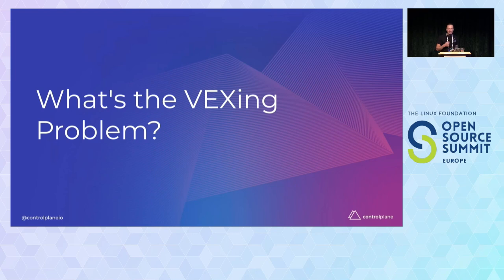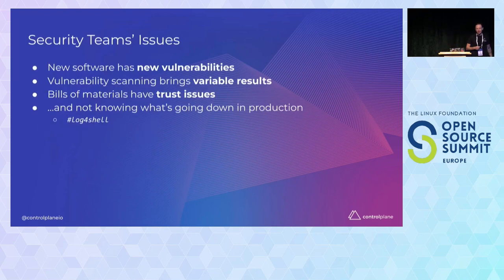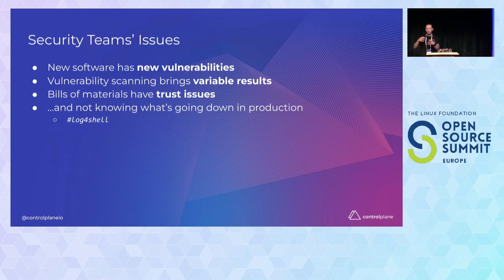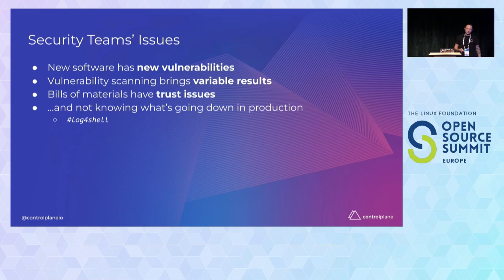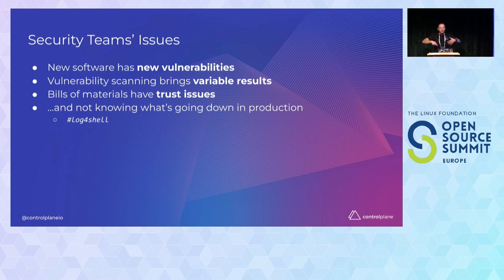What is the problem? We want fresh software. Freshly minted software contains freshly minted vulnerabilities — this is a fact of life. Vulnerability scanning, reverse-engineering the contents of a container image or an open-source package, is variable; there is no deterministic consistency between approaches. Software bills of materials have trust issues: do you trust build time, packaging time? Do you reverse-engineer afterwards to verify? Are things signed? Do we have a chain of trust? These things lead us to the Log4Shell issue — we don't really know what's running in production.